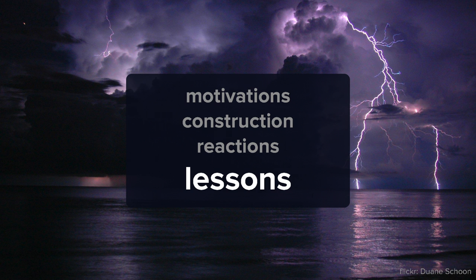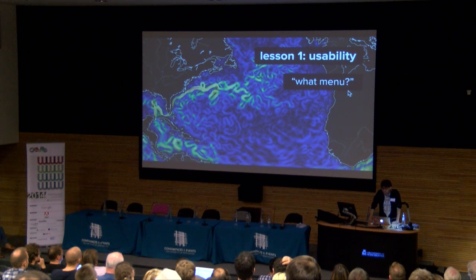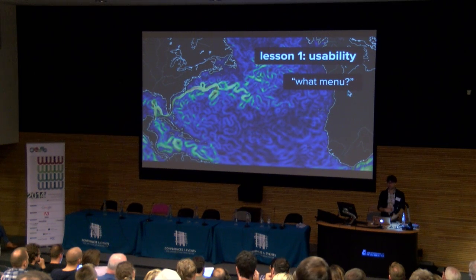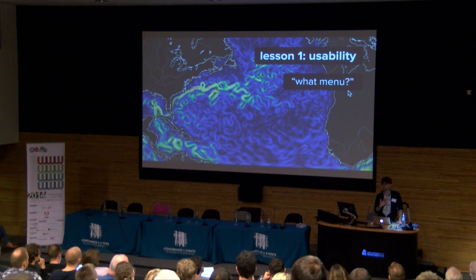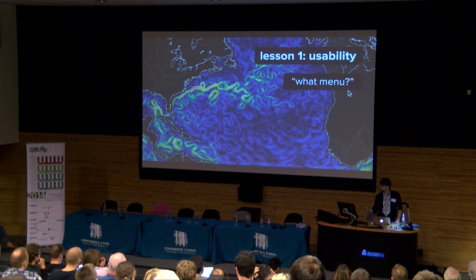Lessons. Usability. Many people who visit the site have no idea there's a menu. I thought I was being really clever: I'll reward people for digging around and finding features as they uncover layers of functionality. But actually, most people have no idea the menu's there. They don't even know you can rotate the globe. Which is a failure on my part. To have the bulk of the functionality be so hidden is a failure.